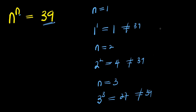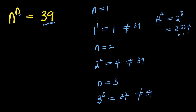Now, if you consider n equals 4, you have 4 to the power of 4, which is the same thing as writing 2 to the power of 8, and this gives you 256, which is far greater than 39. So this is not 39 — in fact it is far greater than 39.